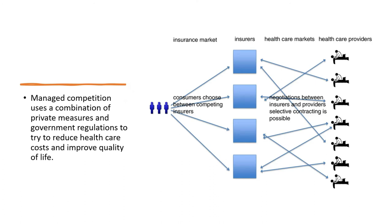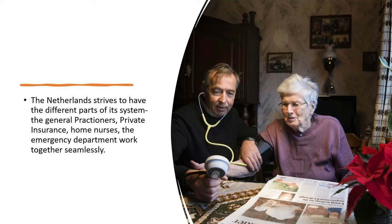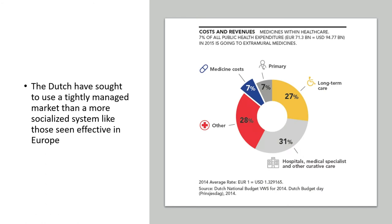The Netherlands uses managed competition — a combination of private measures and government regulation to reduce health care costs and improve quality of life. Managed competition in health care is a purchasing strategy to obtain maximum value for consumers and employers, using rules for competition derived from microeconomic principles. The Netherlands integrates different parts of its system — the general practitioner, private insurance, home nurses, and the emergency department — working together seamlessly. The Dutch use a tightly managed market rather than the more socialized system prevalent in the rest of Europe.